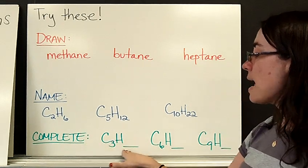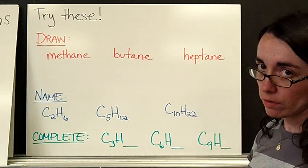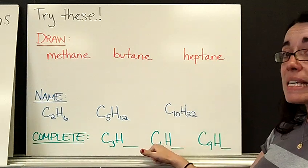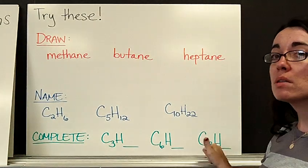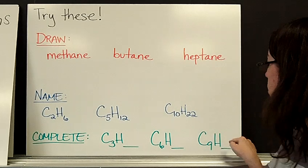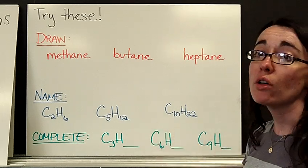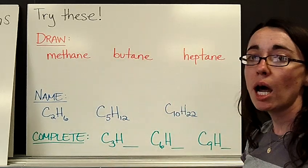And then finally, I'd like you to complete the formula. So here we have C3H—I don't know. Use the general formula, see if you can figure that out. This one here, C6H—who knows? And the last one, C9H—I don't know. So see if you can fill in the formulas for all three of those. Bring in all of this with you on Monday.